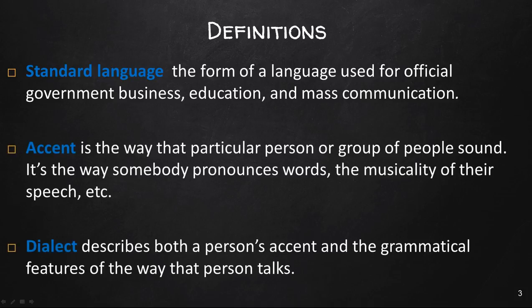An accent is the way a particular person or group of people sound — the way people pronounce words, the musicality of their speech, and so forth. Dialect, on the other hand, describes both a person's accent and the grammatical features of the way that person talks. For example, someone from Alabama has a southern accent, meaning they pronounce words differently than someone from the northern United States. However, accent would not refer to a southerner's use of the word 'y'all.' That would fall under the category of dialect — or when someone says 'he done it' while others say 'he did it,' both are using different dialects because grammatical differences are involved.